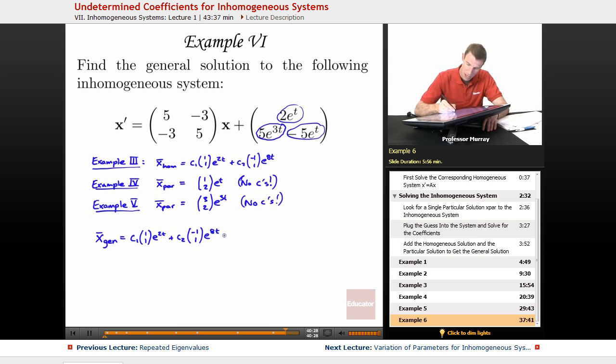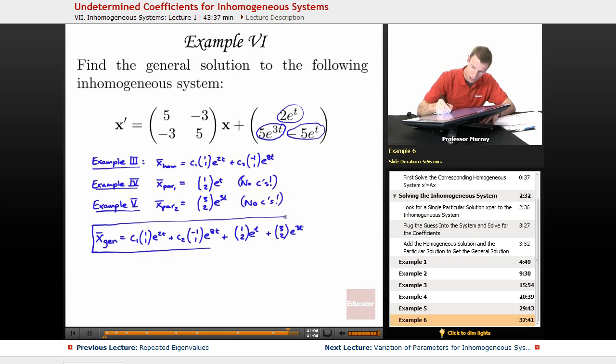And now I'm going to add on each one of those x particulars, you can think of those as being the first particular solution and the second particular solution: [1,2] e to the t, and for the second one, [3,2] e to the 3t. So, we add all those together, and that is the complete solution to that inhomogeneous system.